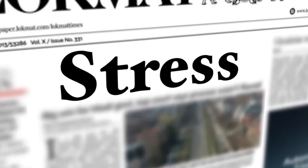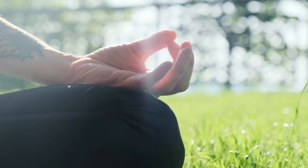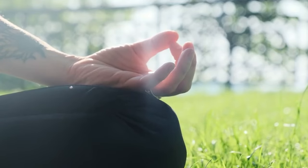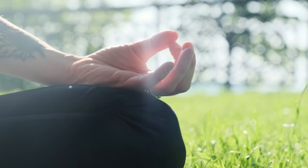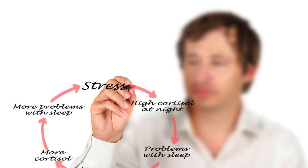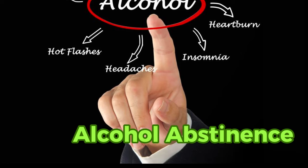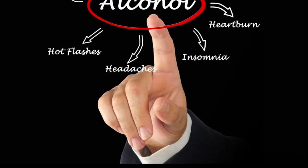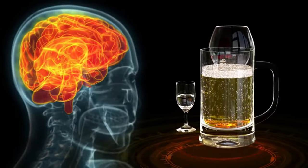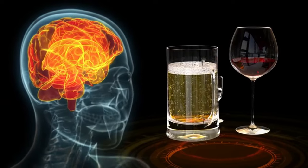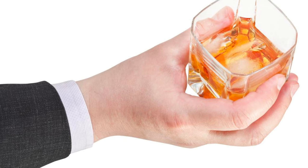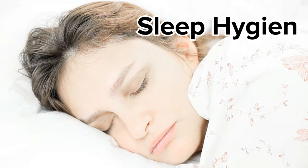Stress reduction is also important, as stress can wreak havoc on liver health. Implementing mindfulness, meditation, and relaxation exercises can help cultivate inner peace, shielding the liver from cortisol-induced inflammation. Abstinence from alcohol is essential in NAFLD management — even moderate alcohol consumption can exacerbate liver inflammation and accelerate disease progression. By abstaining from alcohol altogether, individuals can shield their livers from further harm and set the stage for a brighter future.